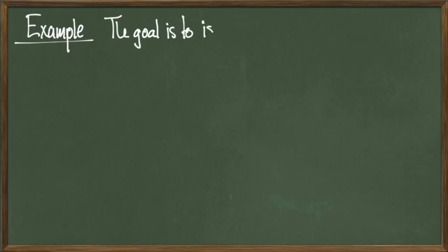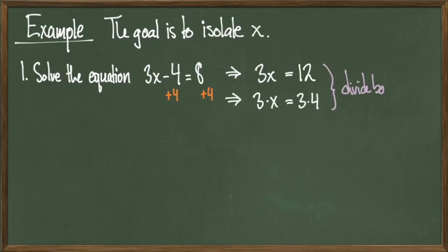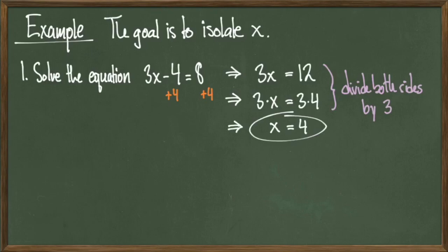In this next example, we'll play the same game of isolating x. Solve for x in the equation 3x minus 4 equals 8. The first step is adding 4 to both sides, which gives the revised equation 3x equals 12. Since both sides are divisible by 3, our next step is to divide both sides by 3, landing us at the solution x equals 4. The basic rule of thumb is to take care of all addition and subtraction steps first, and then take care of multiplication and division of both sides — like we did here.